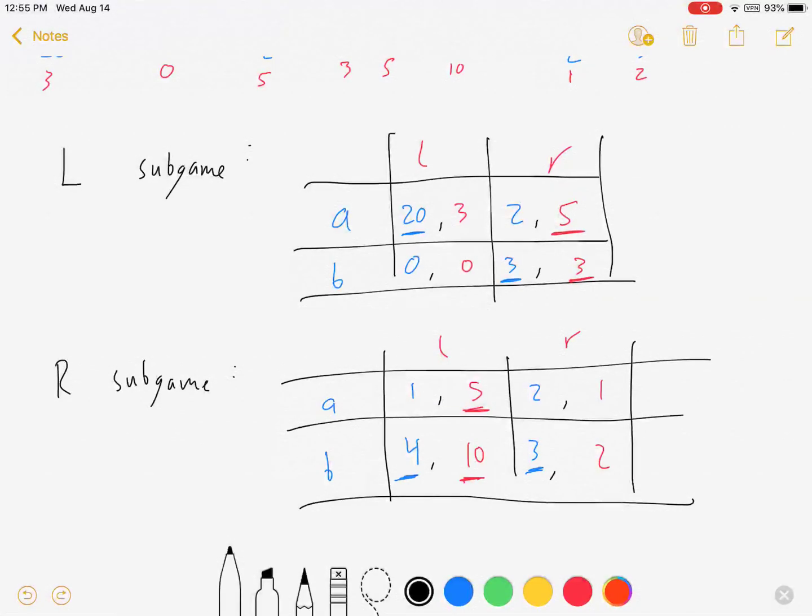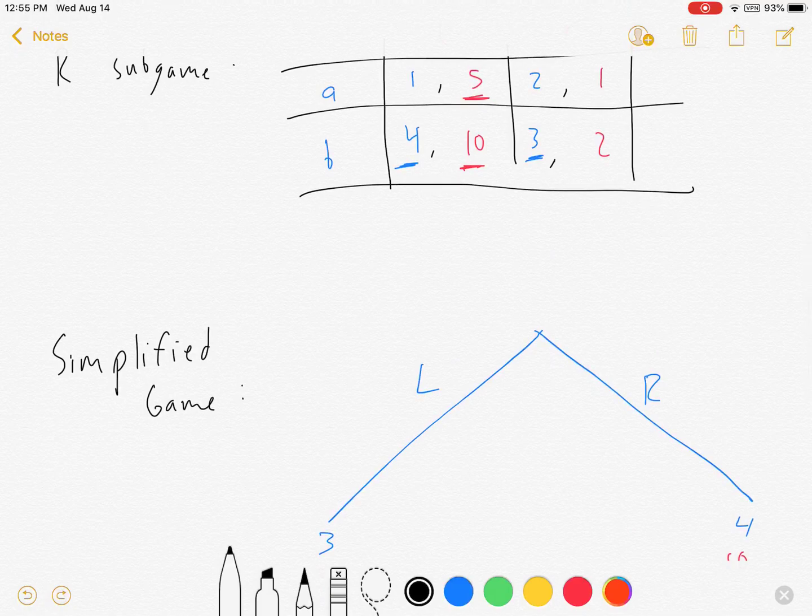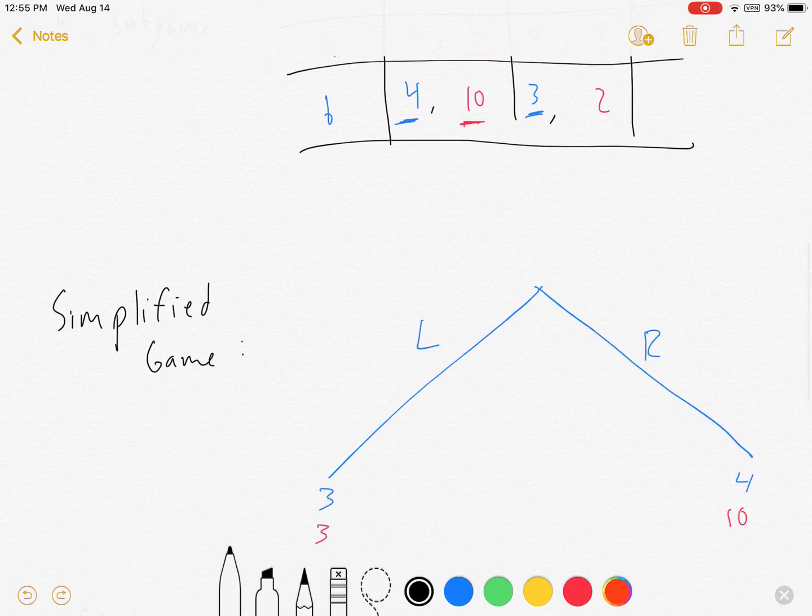So when I see this, I have some idea that the equilibrium outcome involves a right B outcome down here and a left B outcome over here.